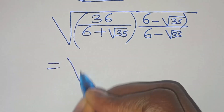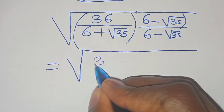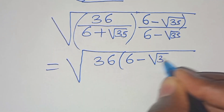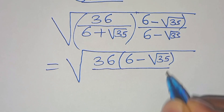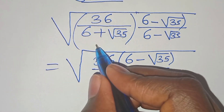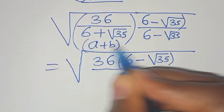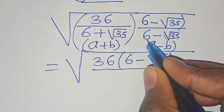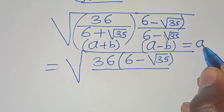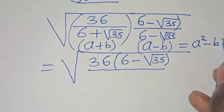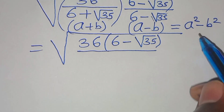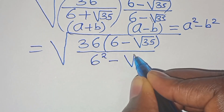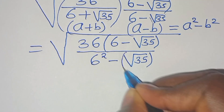Here we have the square root of 36 multiplied by 6 minus square root of 35, divided by 6 plus square root of 35 multiplied by 6 minus square root of 35. This is in the form of (a + b)(a − b), which we can express as the difference of two perfect squares: a squared minus b squared. Applying this identity, we have 6 squared minus square root of 35 raised to the power of 2.